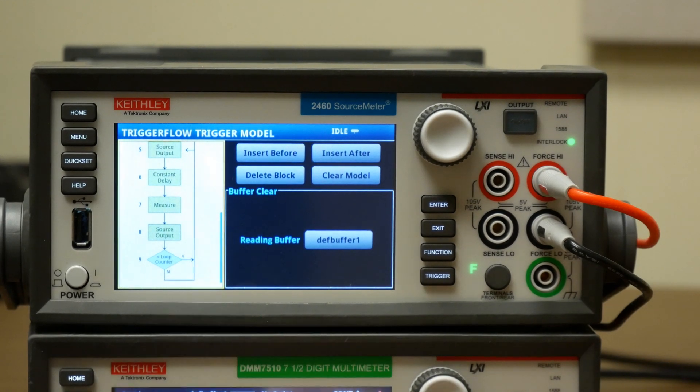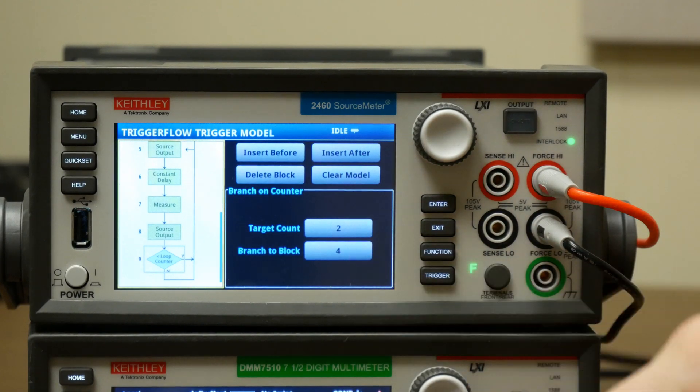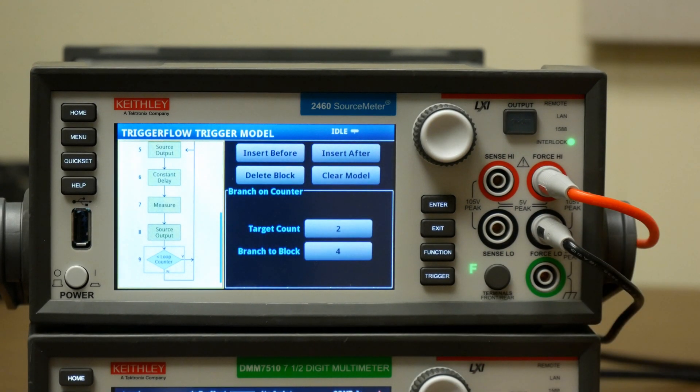where it says loop counter, we're going to click on that. And where it says target count 2, that's the number of times it wants to loop. Since we have two indices,